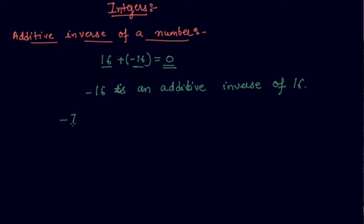If there is a negative sign, you will directly write a positive sign here and the same value. So +76 will be the additive inverse of -76.